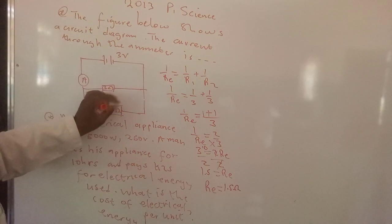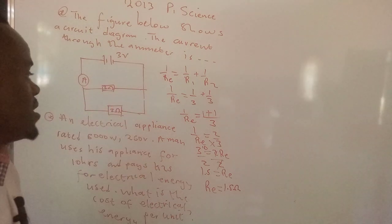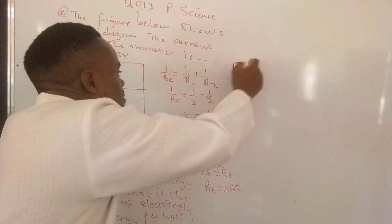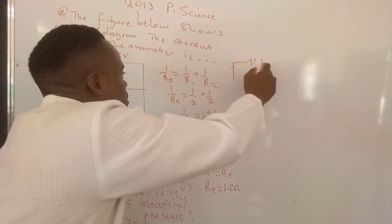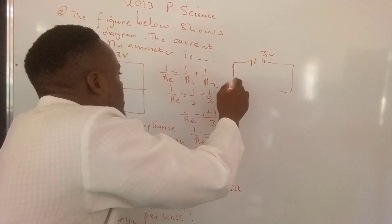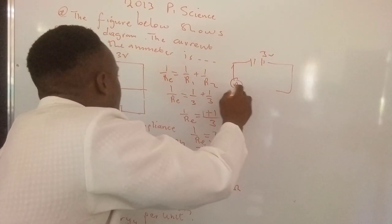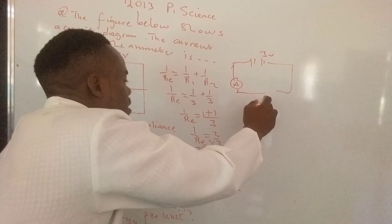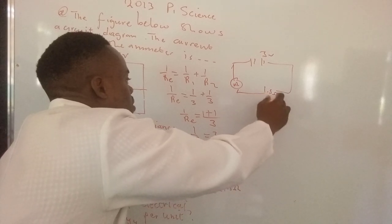When we resolve these two resistors, we can redraw this diagram. We have 3 volts, we have current there, and then here we have 1.5 ohms.